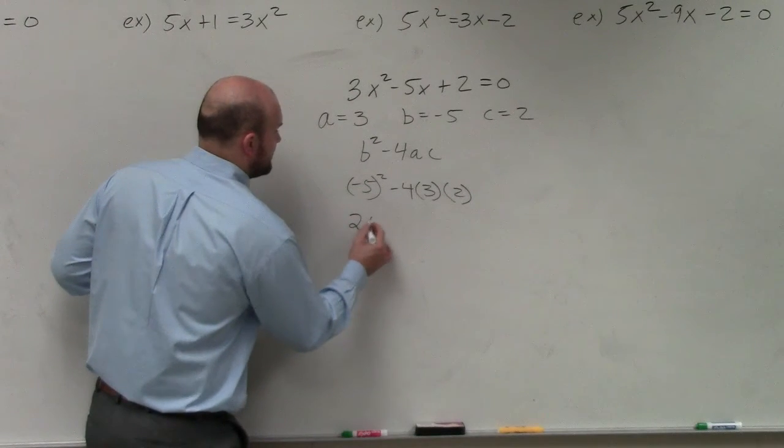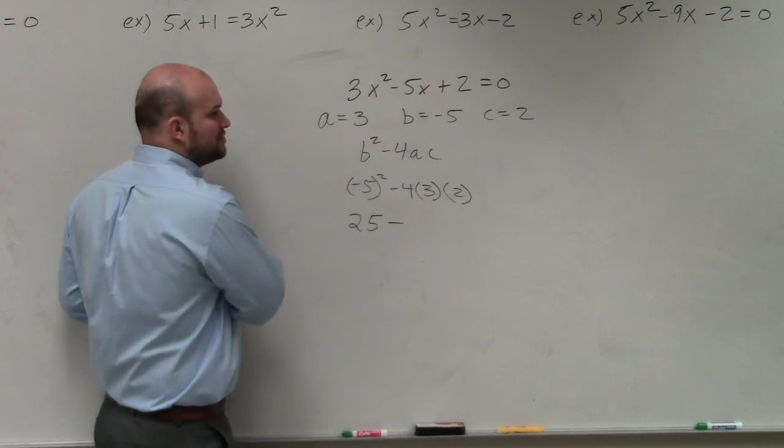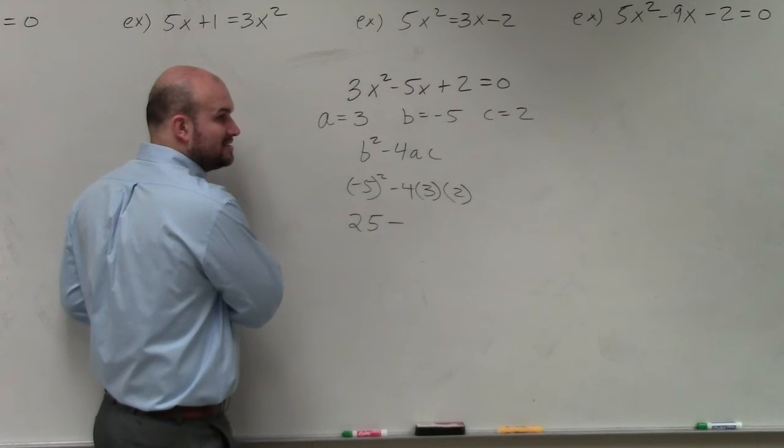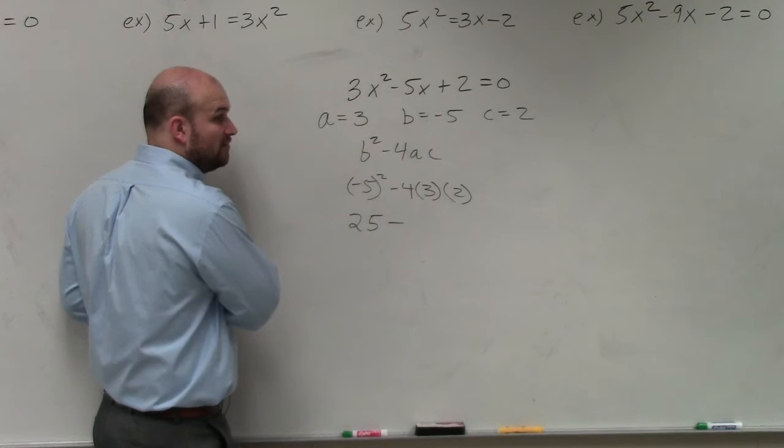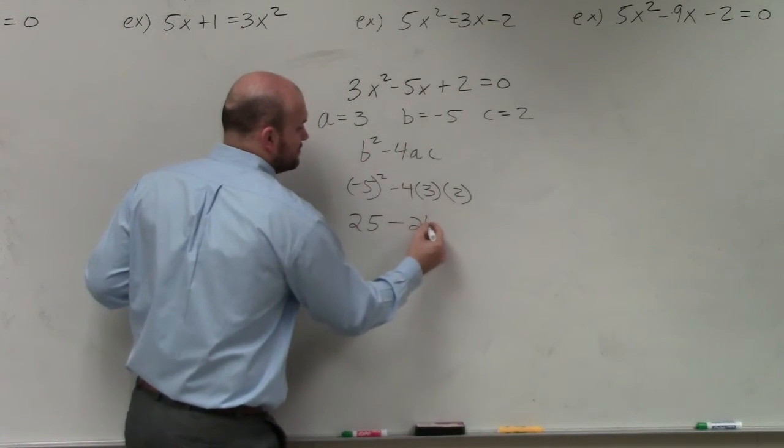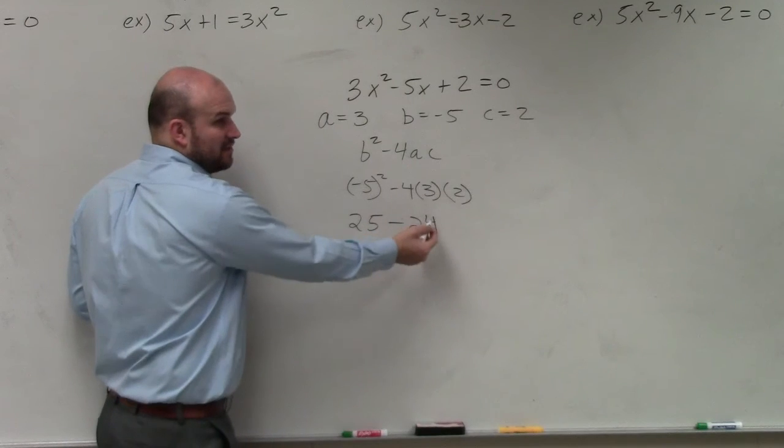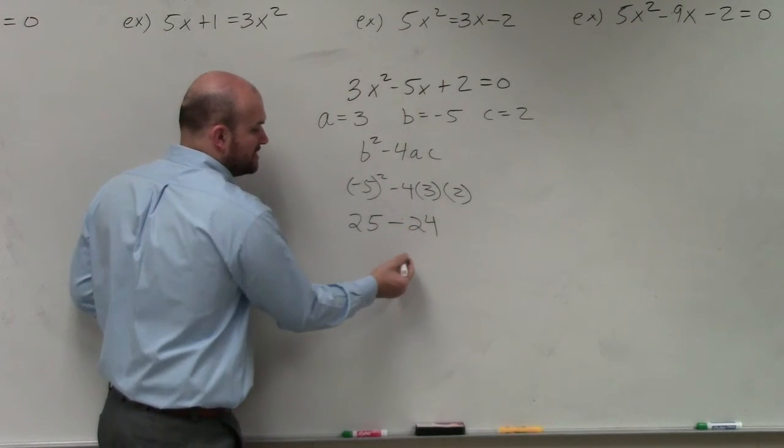Therefore, you get 25 minus... 4 times 3 is 12, times 2 is 24. So 25 minus 24 is 1.